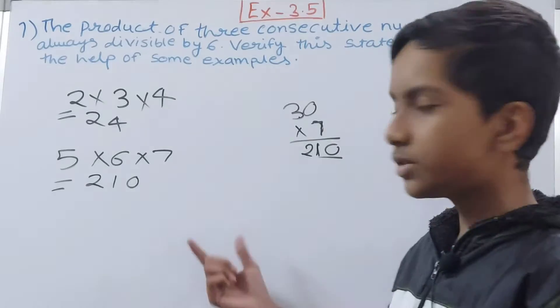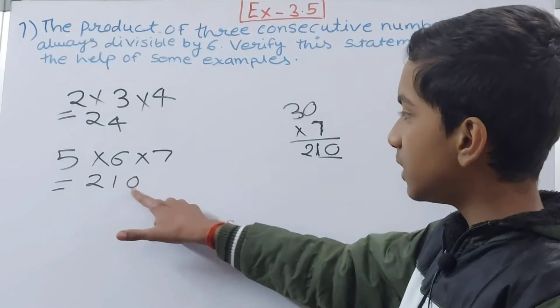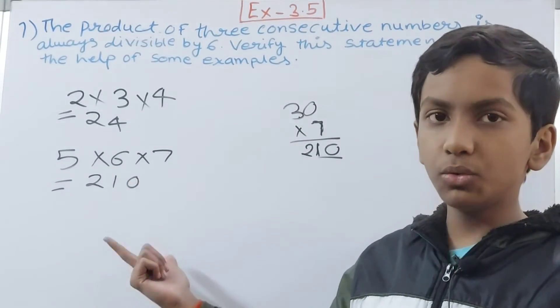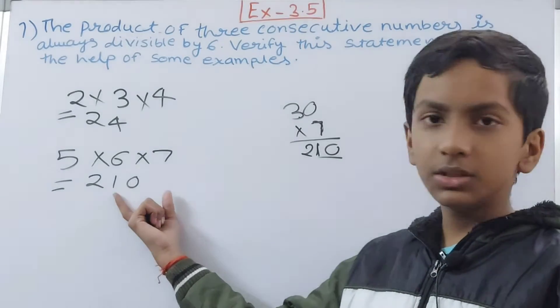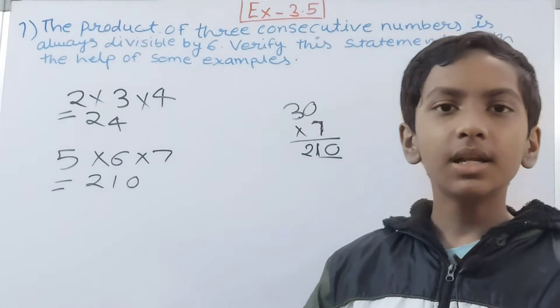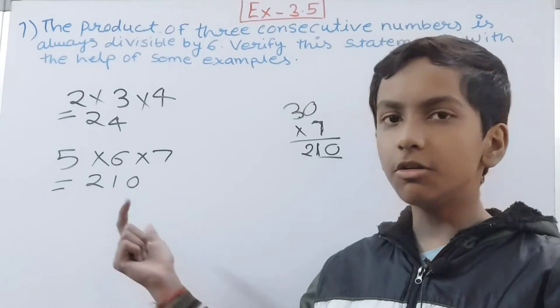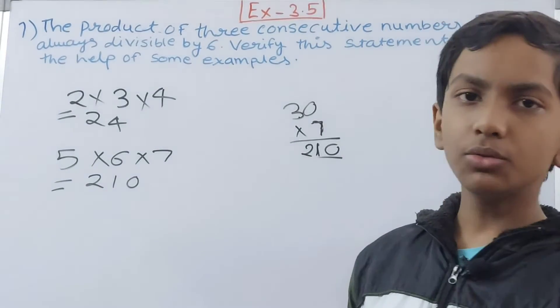Is 210 divisible by 6? We will use the divisibility rule because the number is big. Is it divisible by 2? Yes, 0 is at the ones place. By 3? 2 plus 1 is 3, so it is divisible by 3 as well. When it is divisible by both, it will be divisible by 6. So 210 is also divisible by 6.